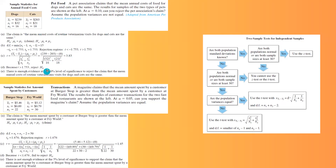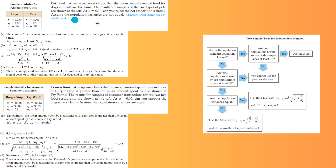Since the test statistic falls in the rejection region, reject the null hypothesis — which means rejecting the claim. Supporting the alternative hypothesis, we conclude there is enough evidence at the 10% level of significance to reject the claim that the mean annual costs are the same. This formula applies when population variances are not equal.